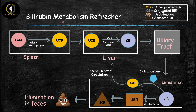Before we can talk about pathophysiology, we need a good understanding of bilirubin metabolism. It all starts in the spleen, where splenic macrophages break down old red blood cells, producing unconjugated bilirubin as a byproduct. Unconjugated bilirubin can be toxic and serves no purpose, so it's sent to the liver to be eliminated through bile. However, it is not water-soluble, so it must first be conjugated.